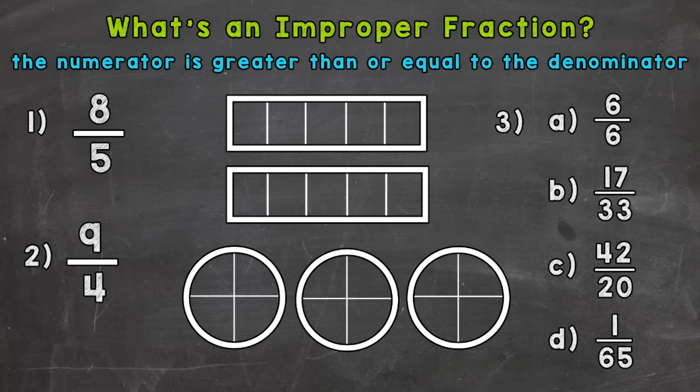In number one, we have 8 fifths. You can see that our top number is greater than the bottom number, therefore we have an improper fraction. Let's take a look at modeling this fraction to show how it is greater than one whole. So 8 fifths — I have two whole rectangles to the right here, so we need to fill in 8 fifths. Each rectangle is cut into fifths, so we need to fill in 8. For example, this would be 1 fifth.